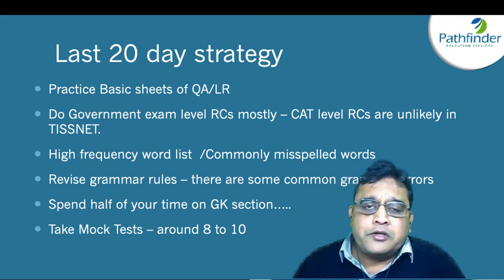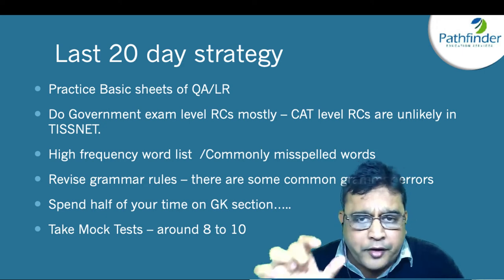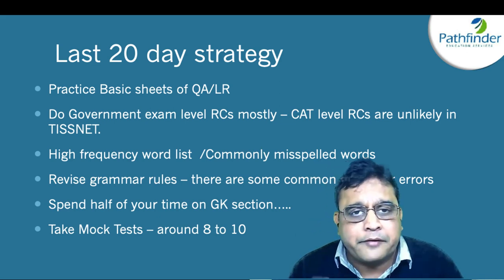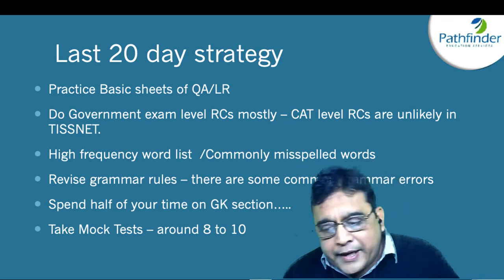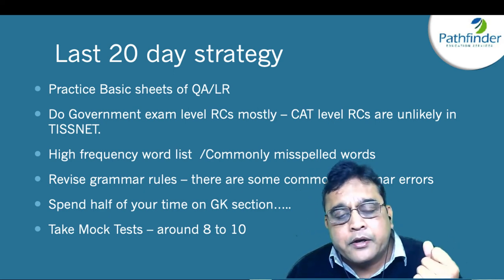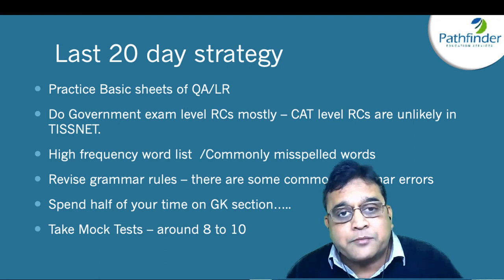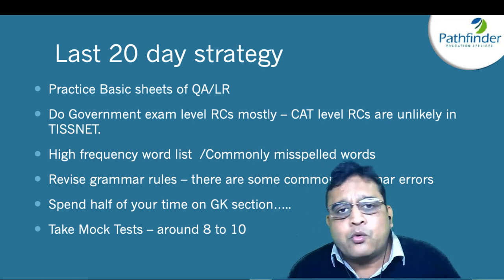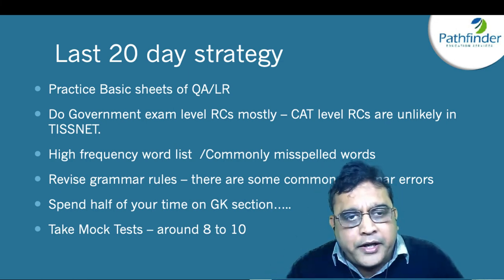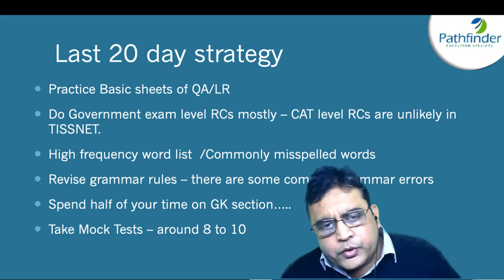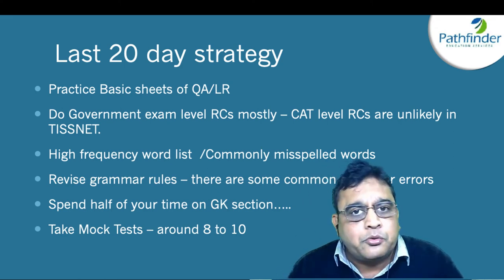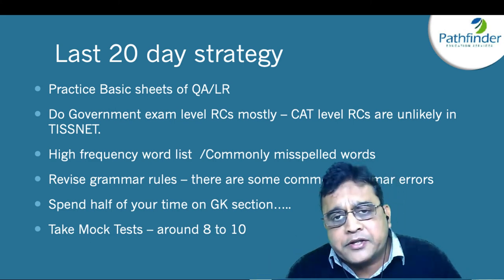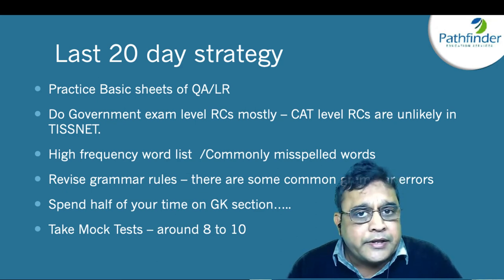Spend half of your available time on general knowledge alone. This is very important for two reasons: first, the general knowledge section is the only section with a mandatory cutoff of 35%; and second, doing well on general knowledge quickly gives you extra minutes for the quant section. For example, if you can answer 40 GK questions in just 5 to 7 minutes, those extra minutes can be used for quantitative aptitude. So spend half your time on GK and current affairs — it will really help you.